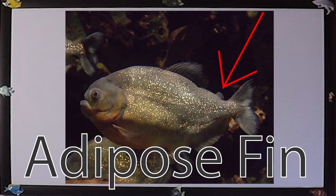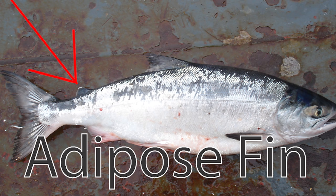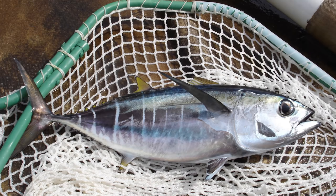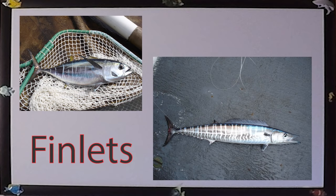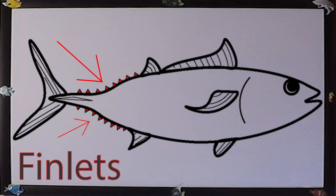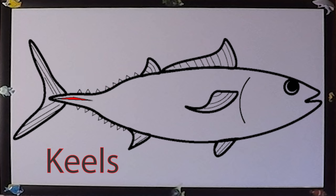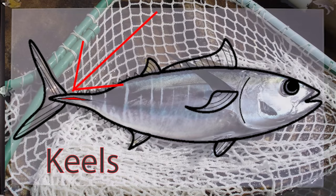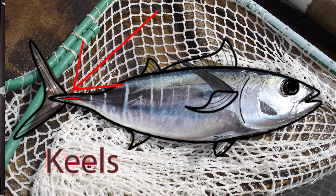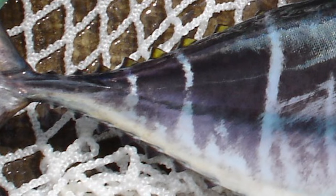The adipose fin, which can be present both dorsally and ventrally on fishes, is usually just before the caudal peduncle near the tail. Contrary to its name, it is more often than not not composed of fatty tissue. Some species, such as scombrids — tunas, bonitos, and mackerels — have a number of dorsal and anal finlets. These are sometimes accompanied by keels, which are paired lateral protrusions aiding in locomotion. You see these a lot on pelagic fishes that swim fast and far, also known as cruising fishes.